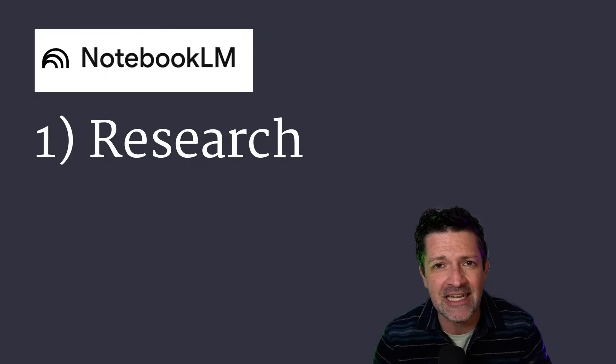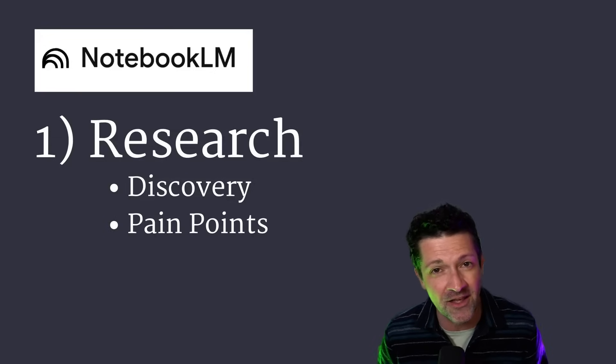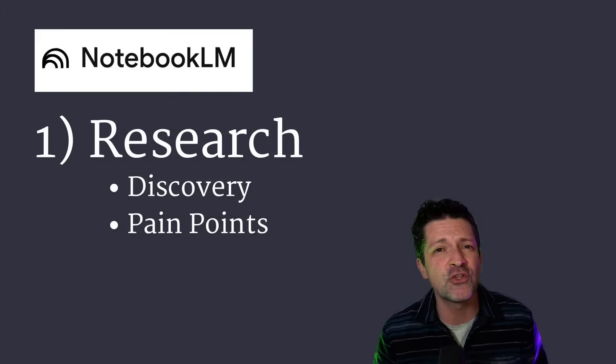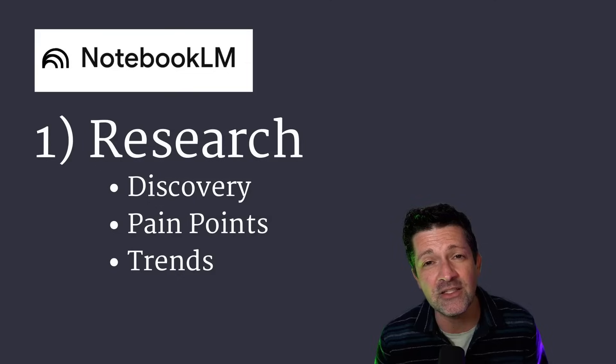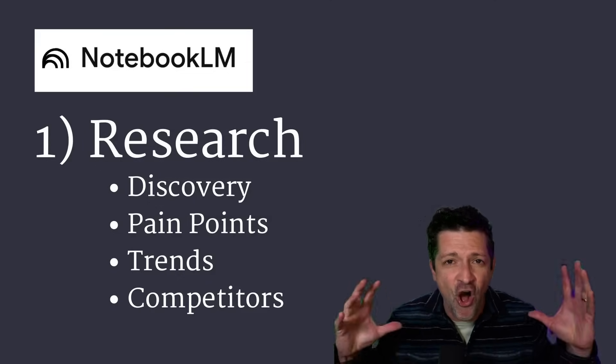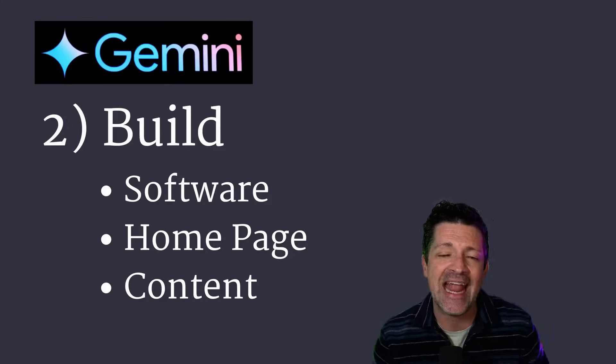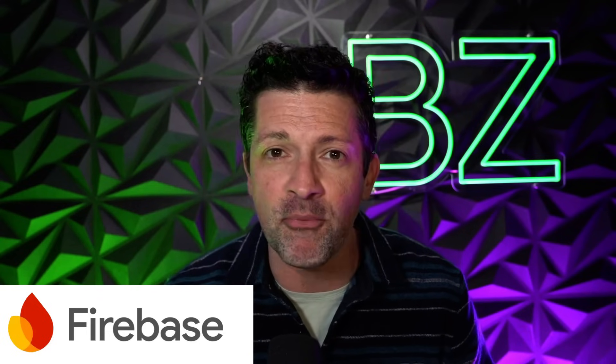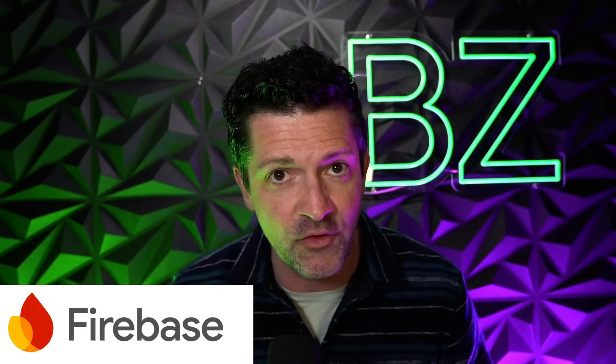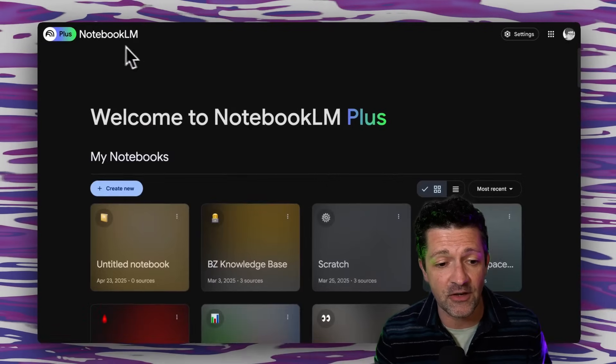Here's the gist of what we're going to get into today. We're going to use Notebook LM, especially its new Discover feature, to look into the pain points of your particular customer, then look into trends in your specific industry, and then look into competitors in your space. We're going to take all that information and do a smart analysis on it, then pass it to Gemini 2.5 to actually build out the software, the marketing website, and the marketing content. We're also going to look into Firebase as a way to move from an MVP or prototype directly into a full-fledged web app that you can sell.